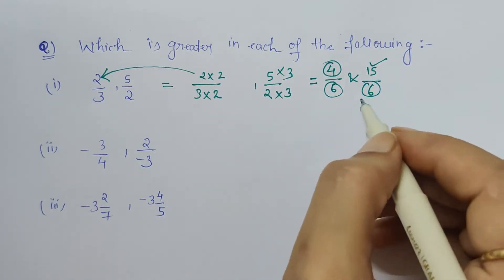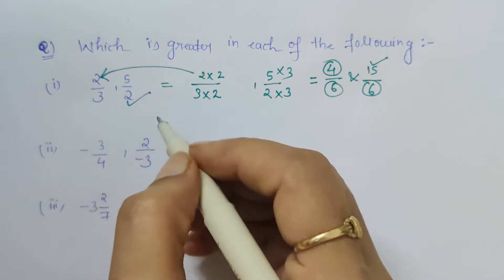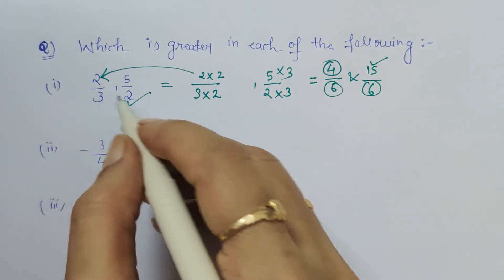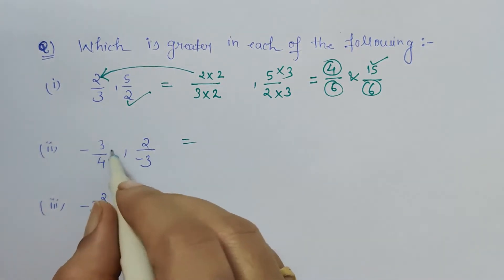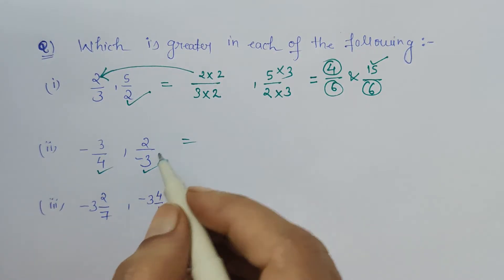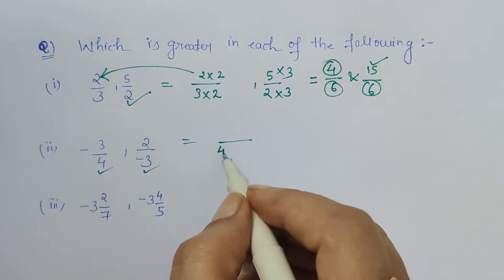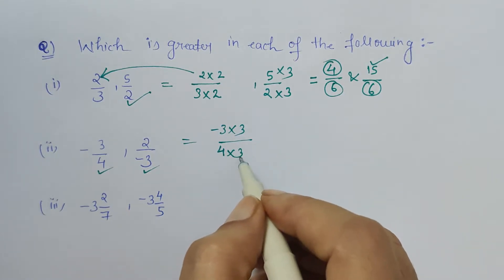So here 5 by 2 is greater than 2 by 3. Now let's see this question: here it is minus 3 by 4 and minus 2 by 3. So first let's find the LCM of 3 and 4, it is 12. How we get 12? 4 into 3, right? So minus 3 into 3, because we are multiplying denominator by 3, so numerator will also get multiplied by 3.